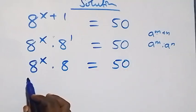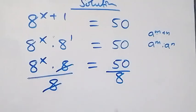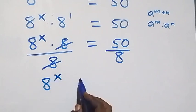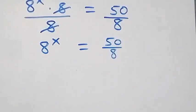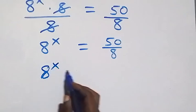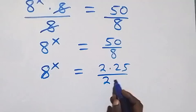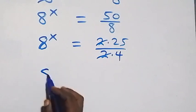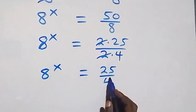Next, we divide both sides by 8, which gives us 8 raised to power x equals 50 over 8. We can rewrite this as 2 times 25 over 2 times 4; the twos cancel each other, and this becomes 8 raised to power x equals 25 over 4.